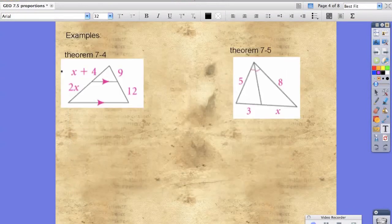So to demonstrate the side splitter theorem, this is what it looks like. Just like this first example. We have a triangle where two lines are parallel to one another. That means that these two sides are proportional.